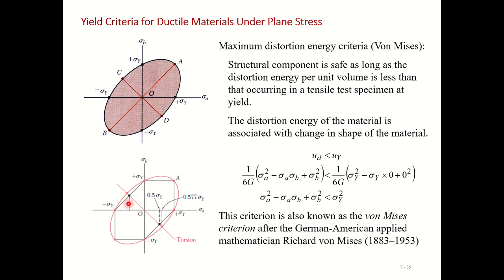For the torsion case, where σ_a and σ_b are equal in magnitude but opposite in sign, the Tresca criterion gives 0.5σ_y while the Von Mises criterion gives 0.577σ_y. Practical experiments show that the Von Mises criterion is more accurate than Tresca. However, it is the designer's choice whether to use the Tresca or Von Mises criteria.